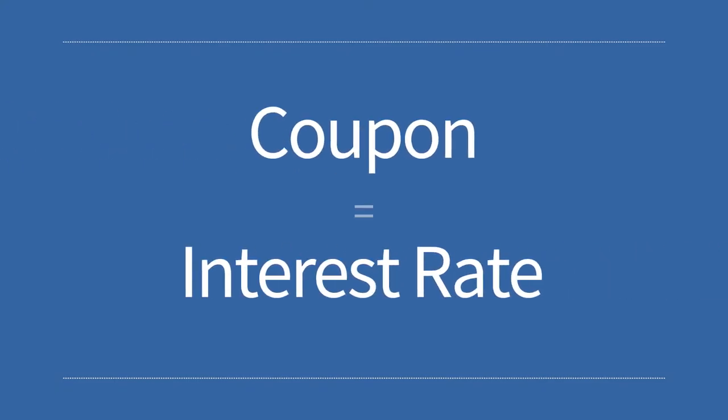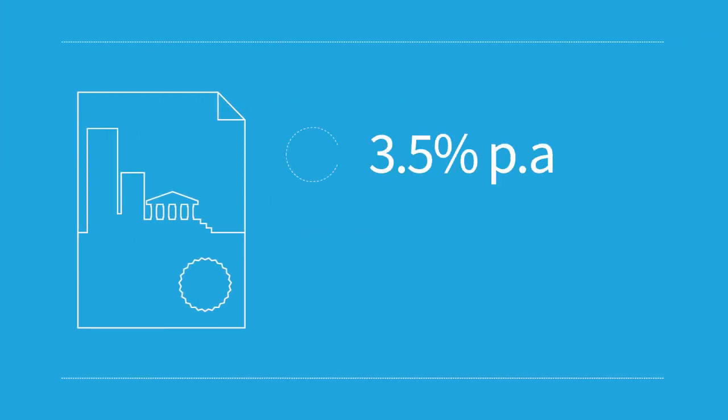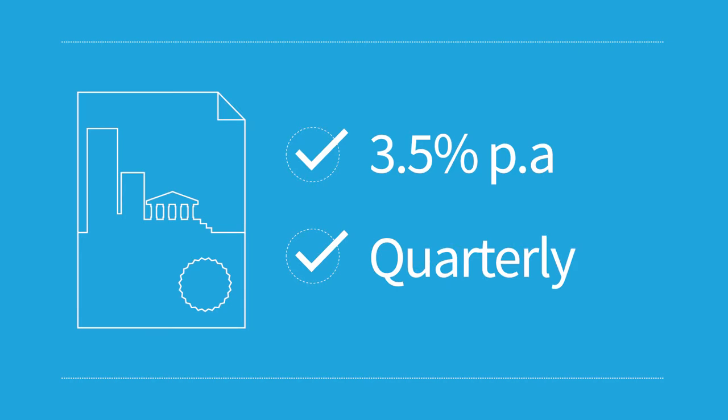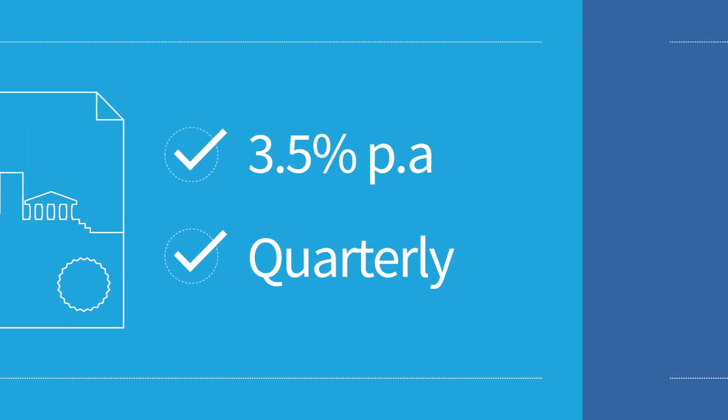A coupon is the interest rate paid on a corporate bond. The coupon rate and payment schedule is set at the time of the corporate bond's issue.